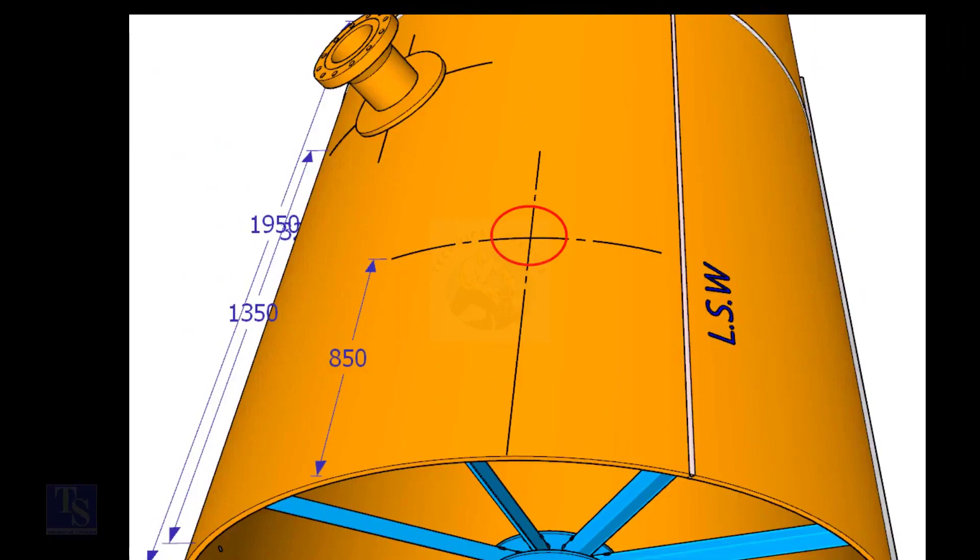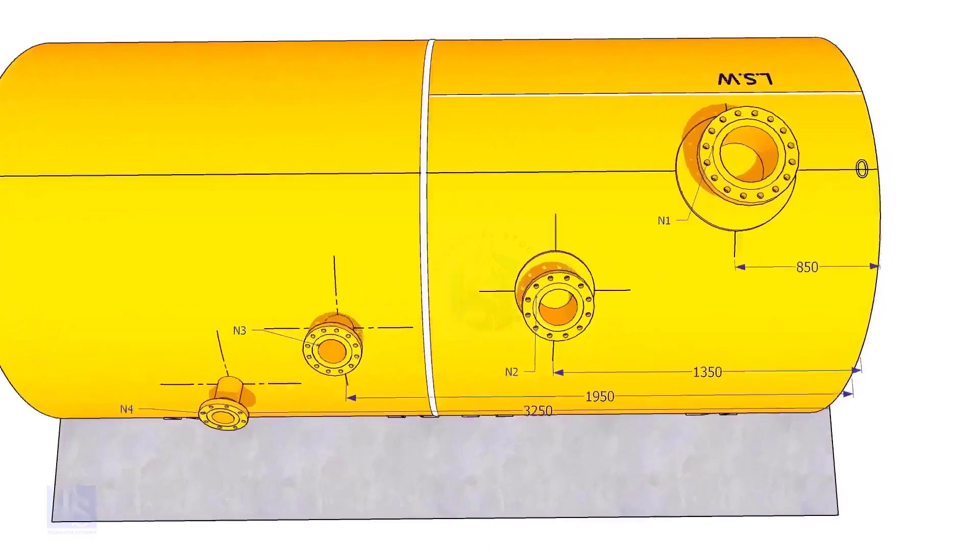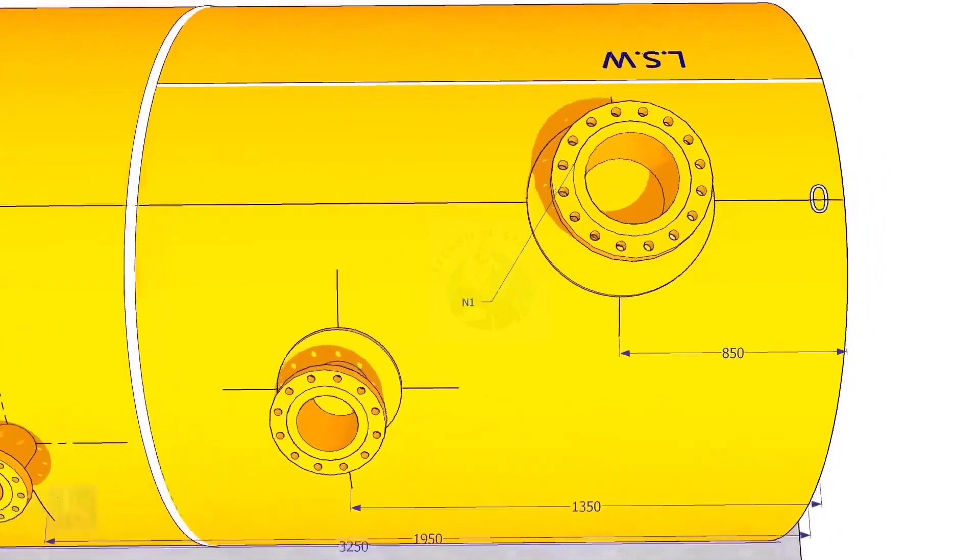This is the center of the nozzle N1. Extend the nozzle N1 center line up to the other end of the shell and mark it as zero degree.